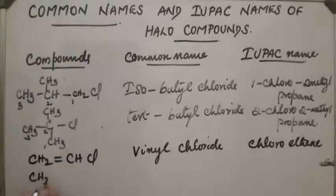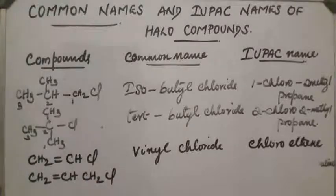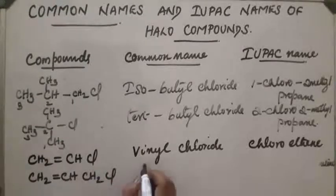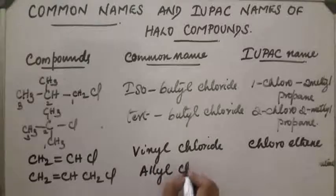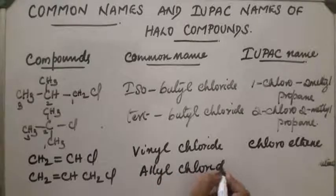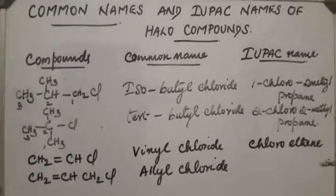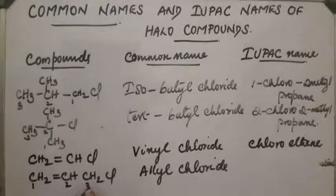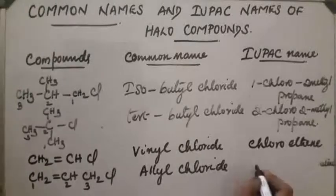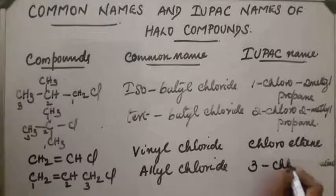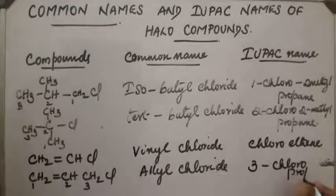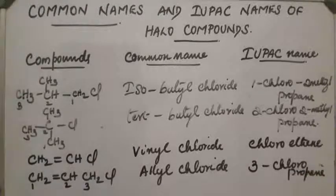Next compound: CH2=CH-CH2Cl. In this case it is an allyl group, so the common name is allyl chloride. For the IUPAC name, numbering from the double bond end gives positions 1, 2, 3, so the chloro is at position 3: 3-chloropropene, or 3-chloropropane.